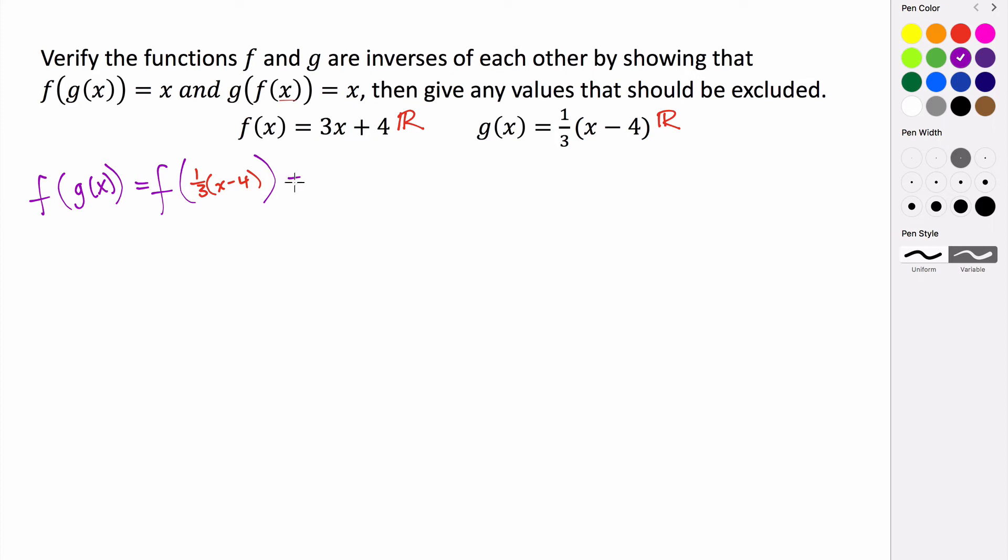So this is going to be three times that whole quantity plus four. So that's one third. So I'm actually going to distribute this. So one third times x is one third x, and then one third times four is negative four thirds. So I just distributed here. Now if I want to evaluate this or simplify this, I'm just going to take three and distribute that through. So three times one third x is just one x, and then three times negative four is negative four.